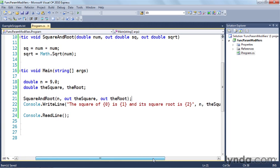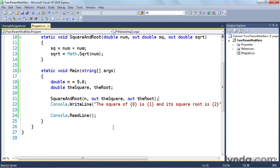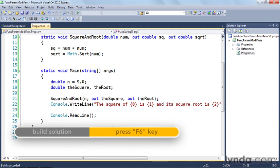I've got a console.writeline call that says the square of this number is this and its square root is this, and I'm just passing in those results to the writeline function. So everything looks good. I hit F6 and it builds just fine. Now let's run it.